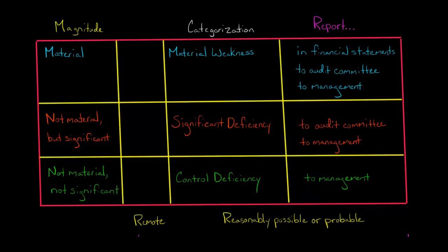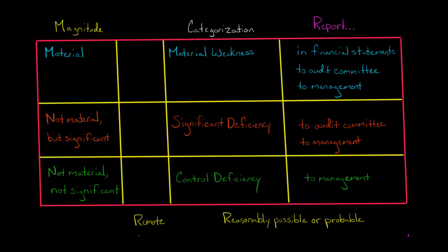Now assume it's probable that if the internal control failed, there would be a misstatement in the financial statements. If it's probable or reasonably possible, and that misstatement would be material, then this is a material weakness. As the auditor, you would have to force the firm to disclose it in their financial statements — for a publicly traded U.S. firm, it would go in their 10K. You would also have to report it to the audit committee and to management.